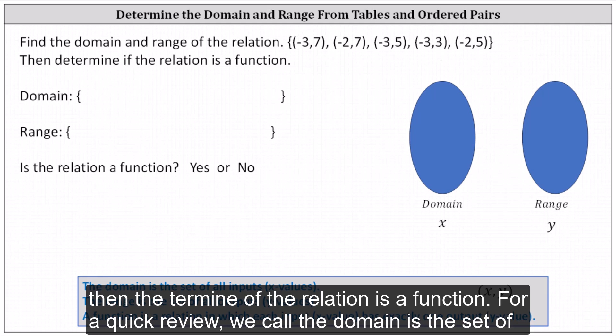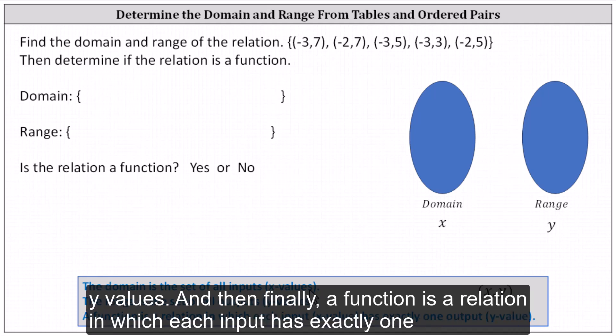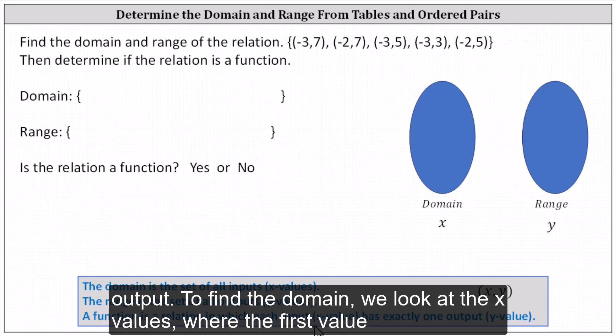For a quick review, recall the domain is the set of all inputs, which are often x values, and the range is the set of all possible outputs, or y values. And then finally, a function is a relation in which each input has exactly one output.